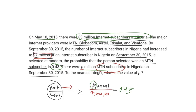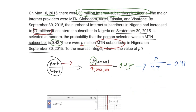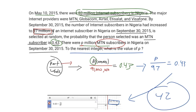Now we just solve for P. You can chuck P over 97 equals 0.43 into Desmos — or rename it with X — and find the intersection. We can see it comes out to 41.71. To the nearest integer, the value of P is 42.